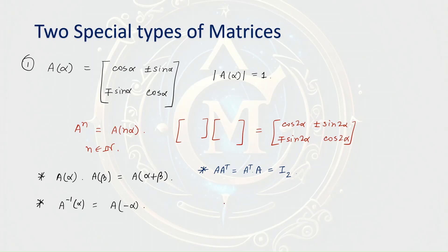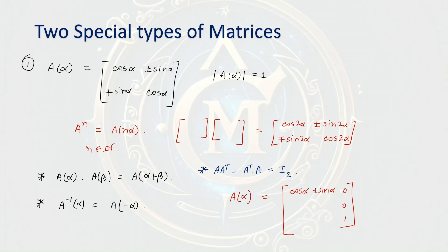Although it has not been asked yet in JEE Mains, it can come in any future shifts. If we write a 3 by 3 version of this matrix — cos alpha, plus-minus sin alpha, 0; 0, 0, 1; minus-plus sin alpha, cos alpha, 0; 0 — this matrix also satisfies all the properties we discussed.